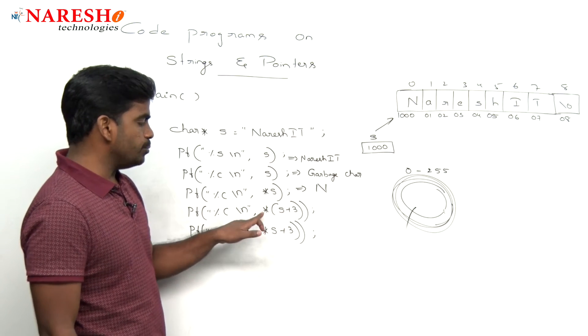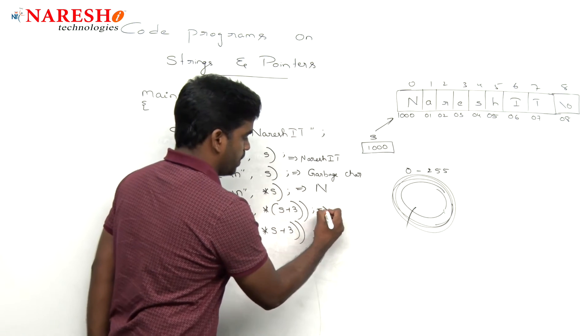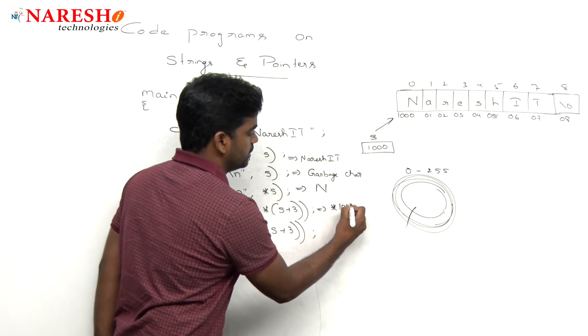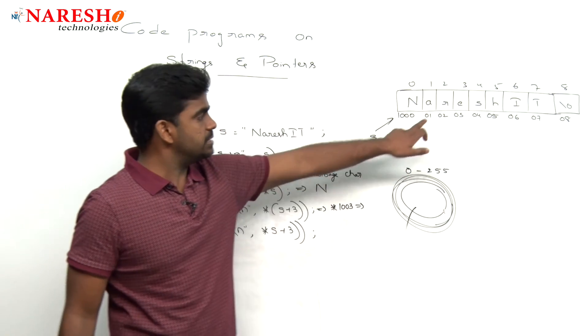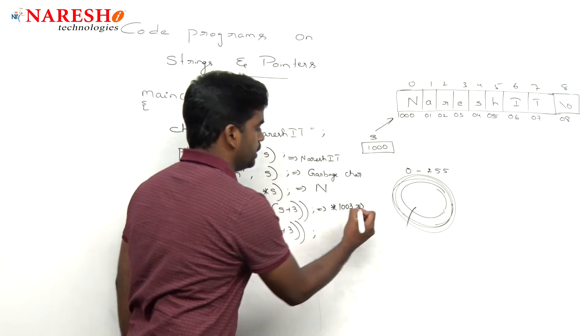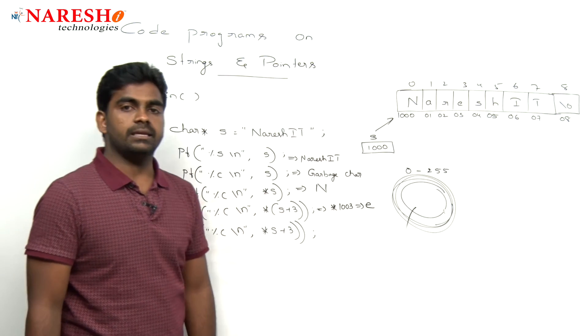Here it is 1003 pointer. Pointer to 1003. So what is that character which is inside that? E. So E will display here.